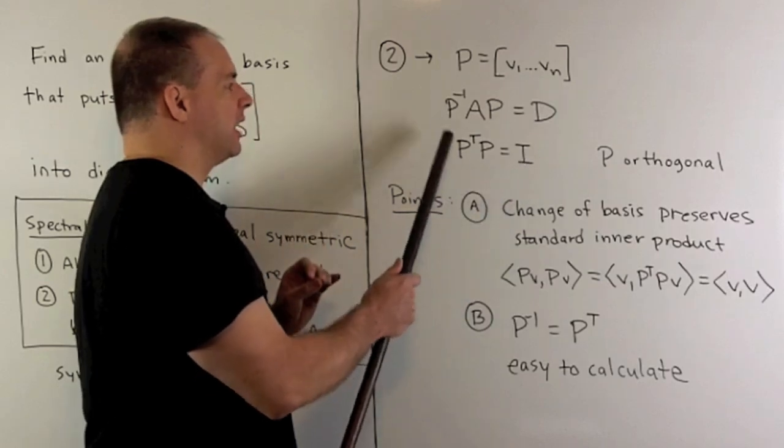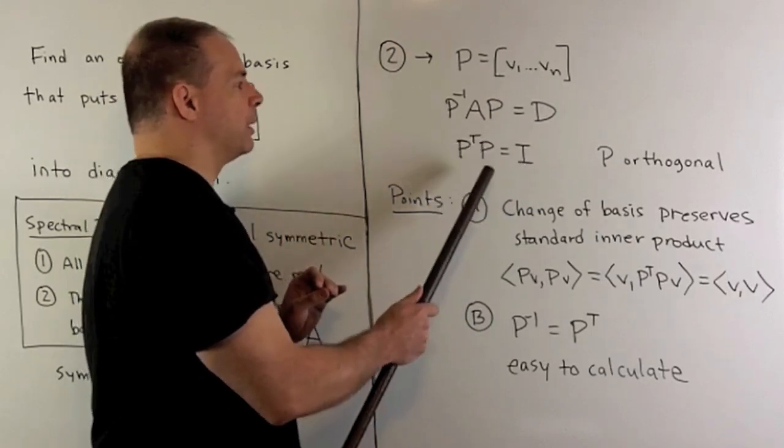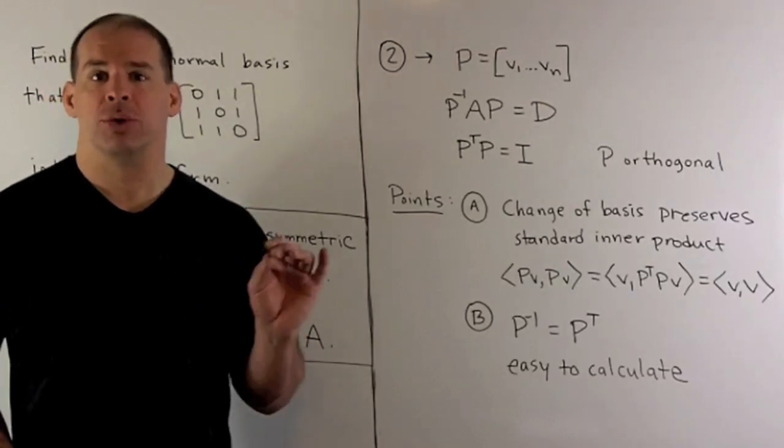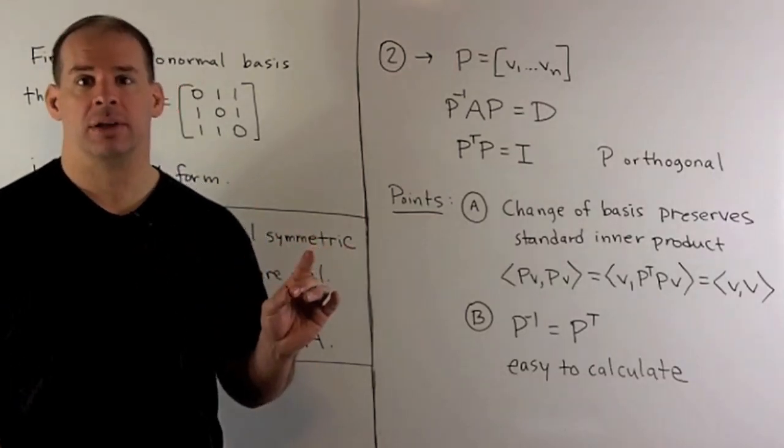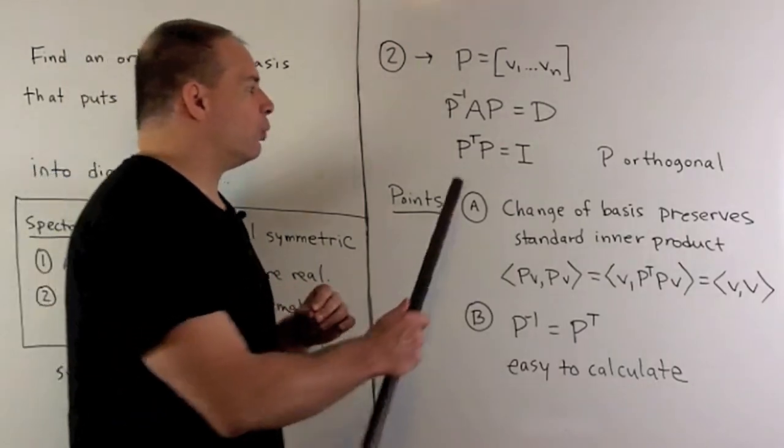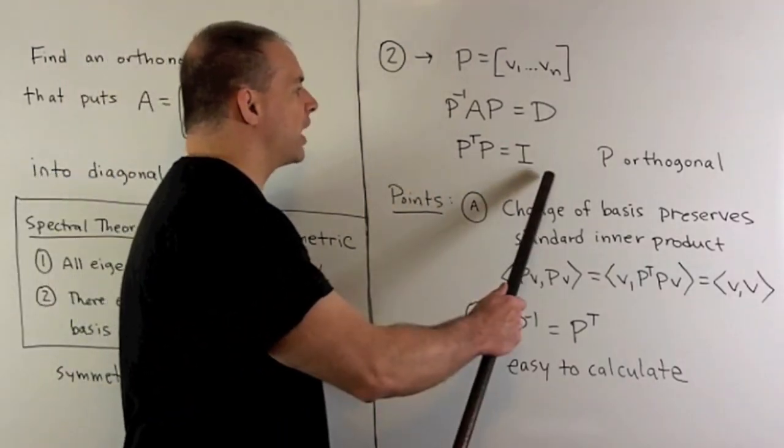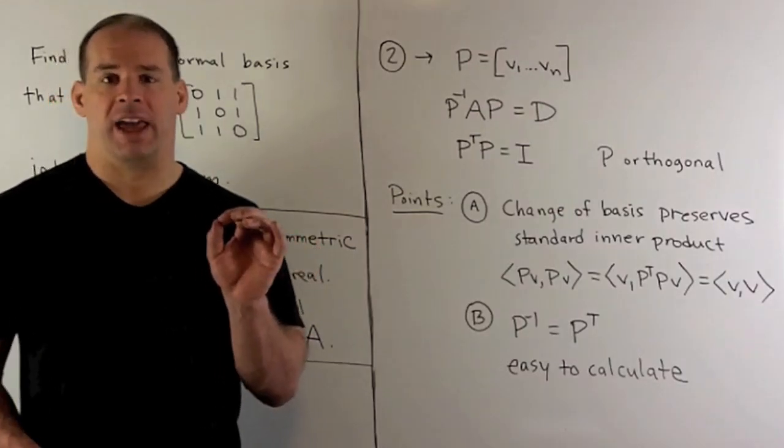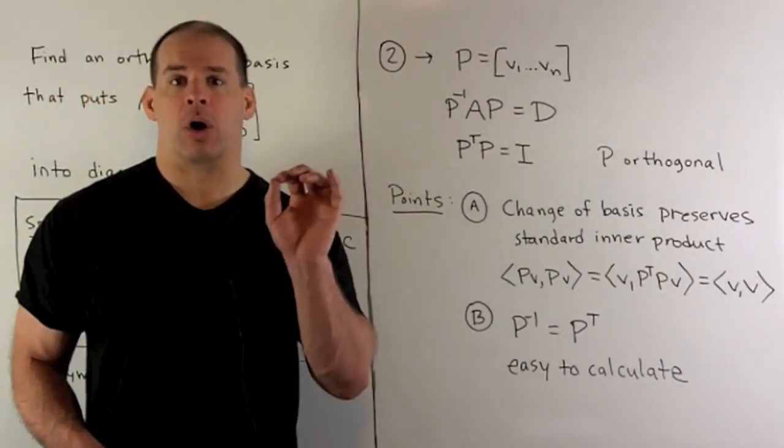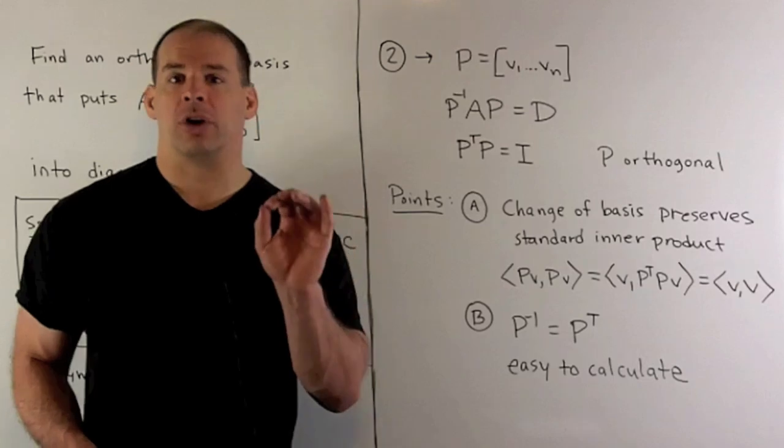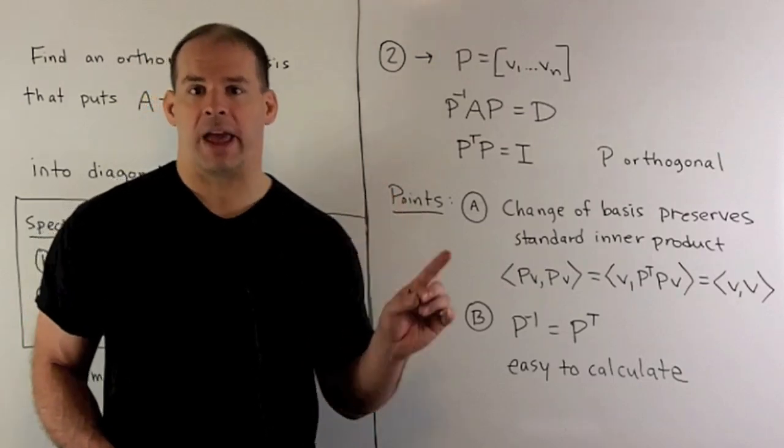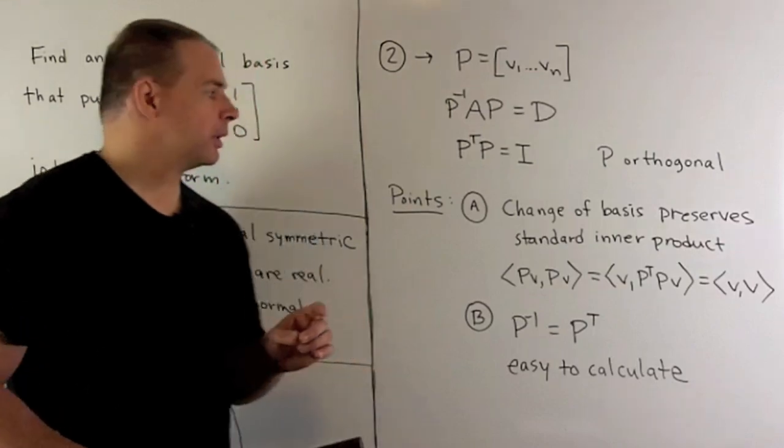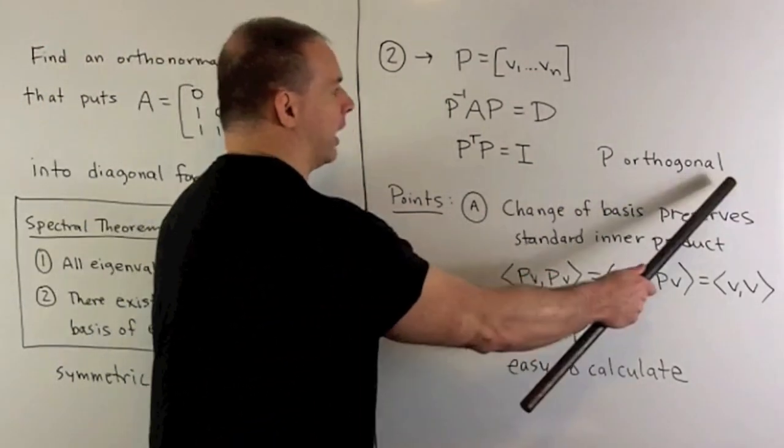We have that if I take P transpose times P, we get the identity. We're able to put our matrix in diagonal form using an orthogonal matrix. If you work out all the row-column products, that's just saying the columns are orthogonal if they're not equal, and they're going to be unit vectors if we measure the lengths.